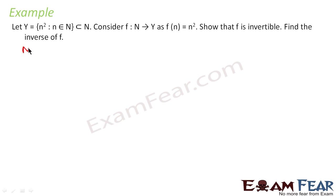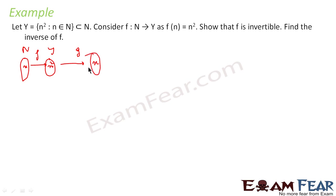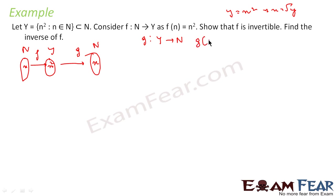Here, the function goes from N to Y, making n into n². I need to create a function g from Y to N which takes n² back to n. Since y = n², n = √y. So I define g from Y to N where g(y) = √y. For example, if y = n², g(n²) = n.